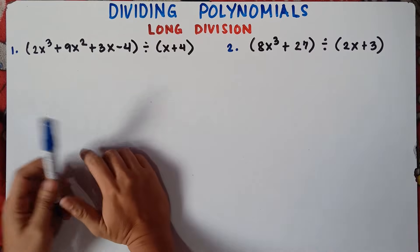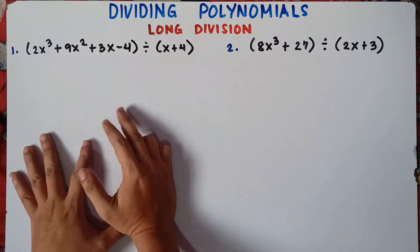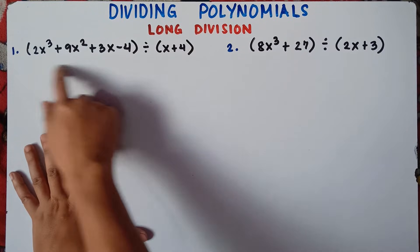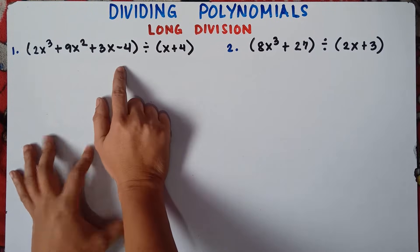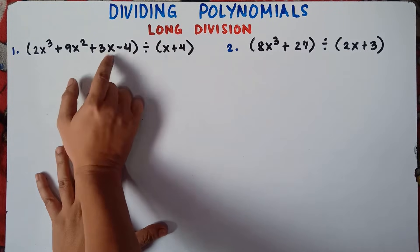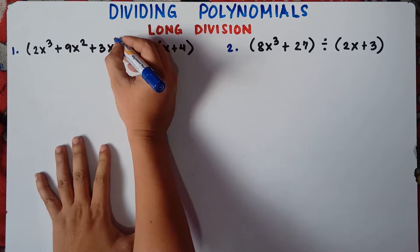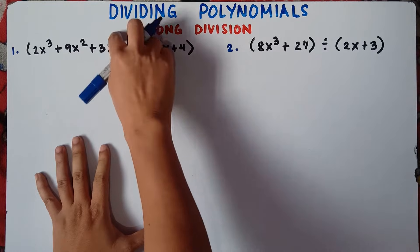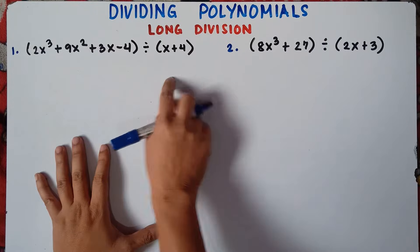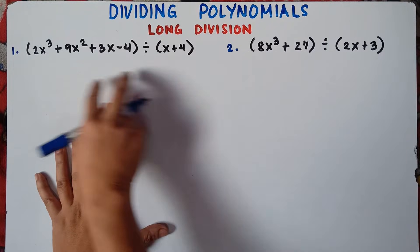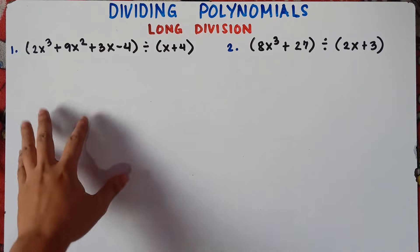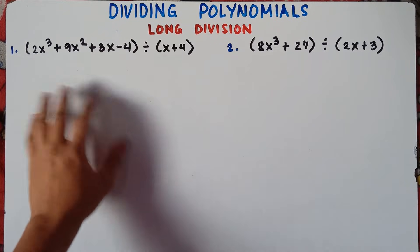Let's start with number one. Before answering, check first the degree or the exponent to see if it's arranged. If the given equation's degree is in order — so we have x cube, x squared, then x, understood that x here has an exponent of one, and then the last term is the number — so it's already arranged and therefore we can divide this polynomial. Always remember: check the arrangement to see if the degree is already in order.